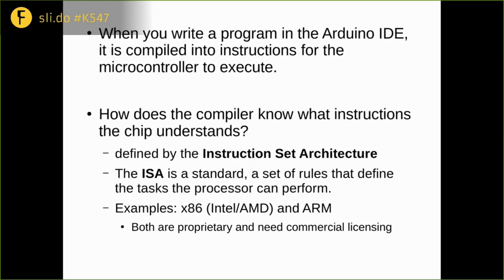Examples of ISAs you've probably heard of would be x86, which refers to Intel and AMD's common instruction set on all of our desktops, laptops, and servers. And then ARM — if you have a smartphone, it is most definitely running an ARM processor. Now, both of these are proprietary, and if you want to use them, you need to have a commercial license from ARM, or with Intel and AMD, it may be possible to get a license.